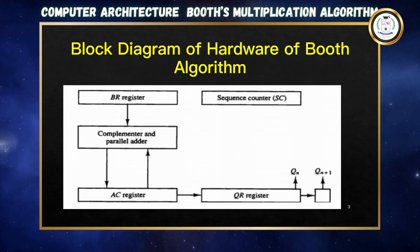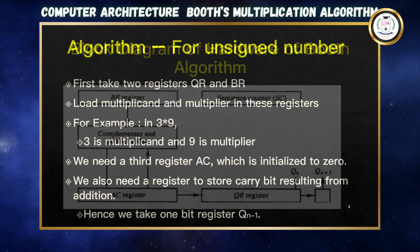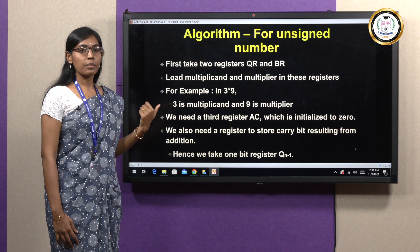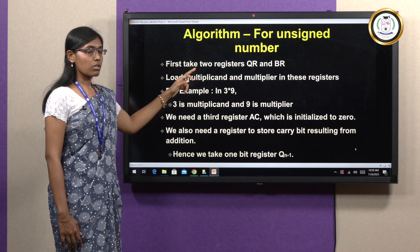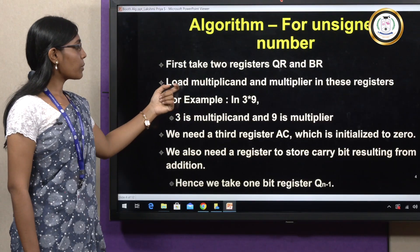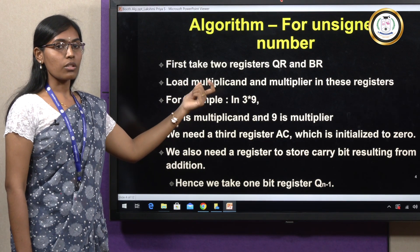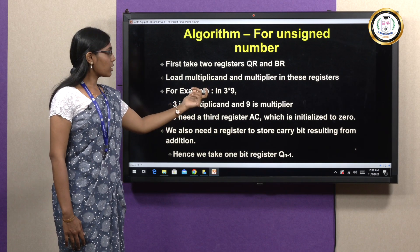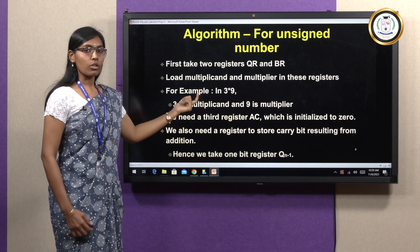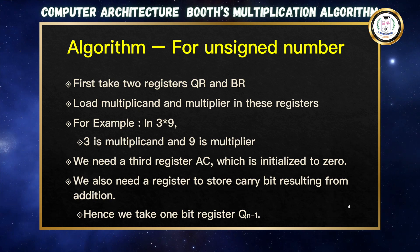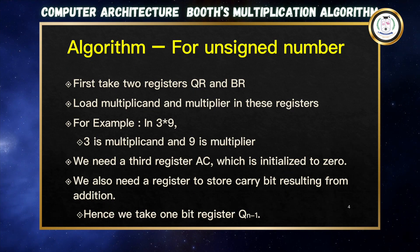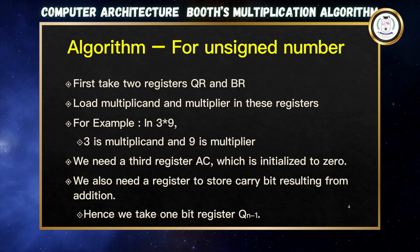For unsigned integers, multiplication is done by taking two registers: QR and BR. The multiplier and multiplicand are stored in QR and BR respectively. For example, multiplying 3 and 9, one value is stored in BR and the other in QR. The AC register is assigned all zeros initially. A carry bit is stored if any carry arises, and a one-bit register QN+1 holds that final carry value.